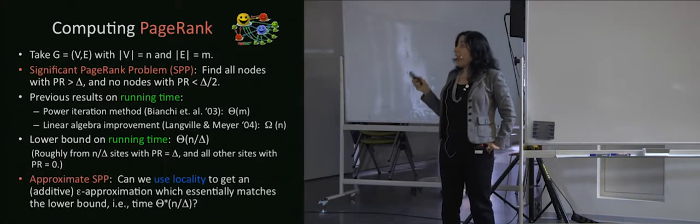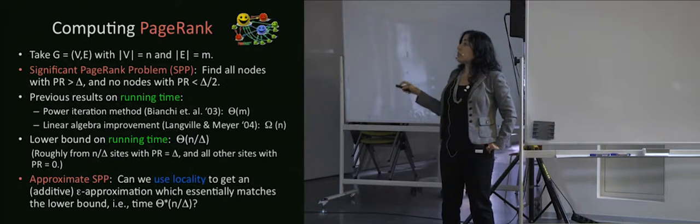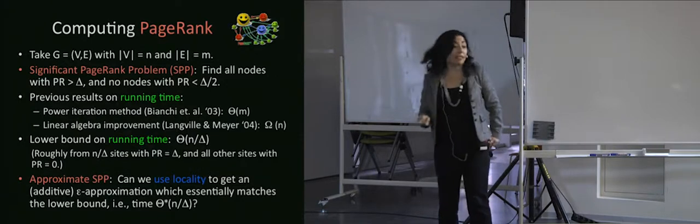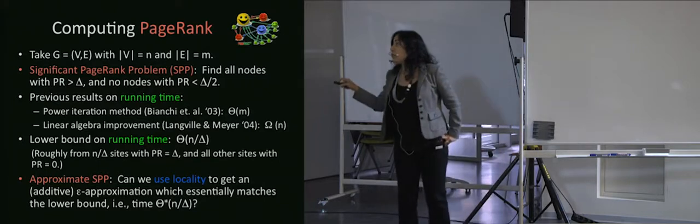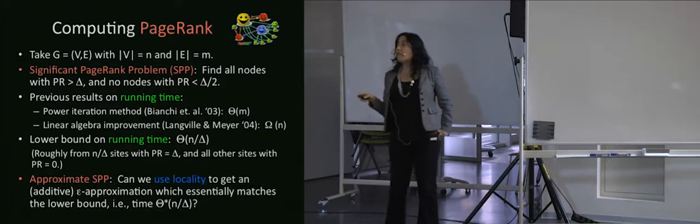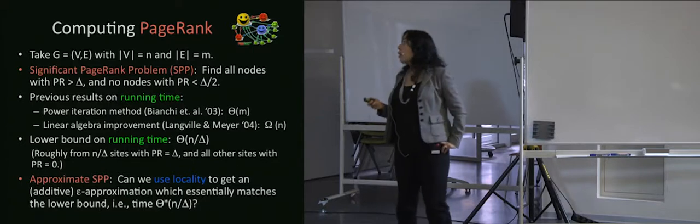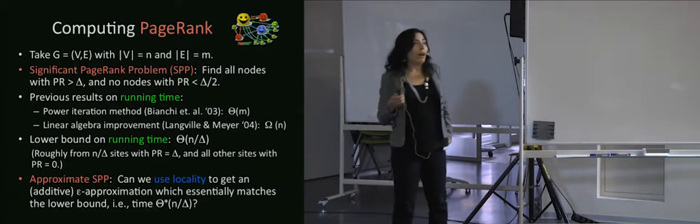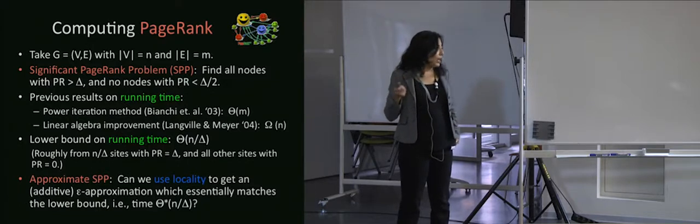Can we use locality? Can we find a local algorithm to get an additive ε approximation that essentially matches the lower bound — solving the significant PageRank problem in time of order n/δ with some log factors?